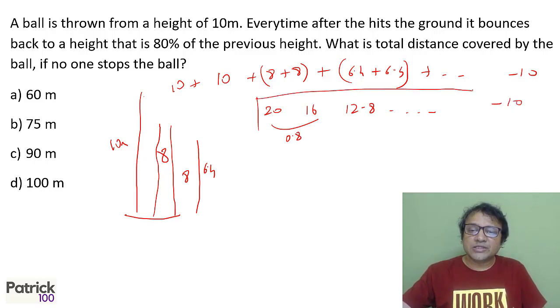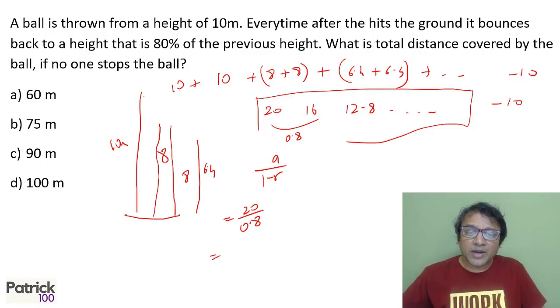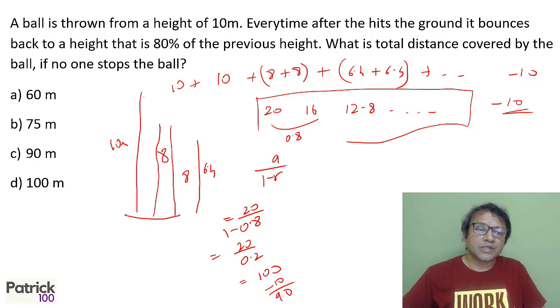The sum of an infinite GP is A upon 1 minus R, which is 20 upon 1 minus 0.8, or 20 upon 0.2, giving you 100. But you have to subtract 10 from the end, so minus 10, which gives you 90 as the answer, option C.